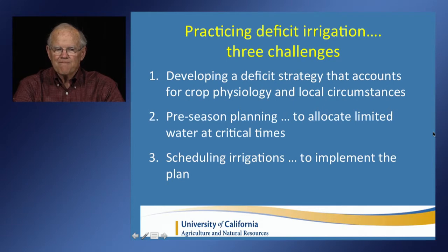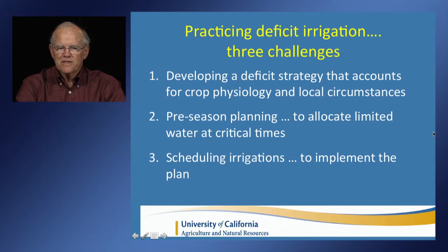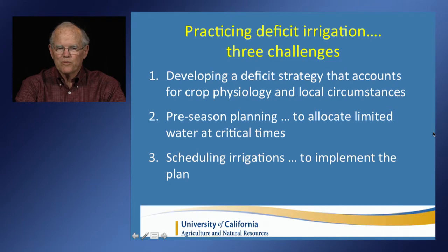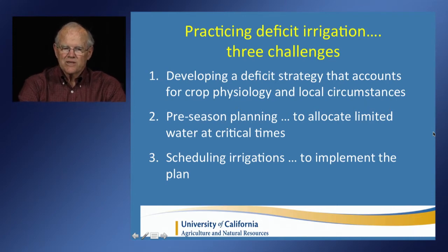The second challenge is preseason planning. Once you have a strategy in mind, you have to look ahead through the entire season. When practicing deficit irrigation, it's typically because you don't have as much water as desired. You'll therefore have to allocate that water among multiple crops and fields, and there will be times when that allocation becomes critical — where converging demands make it impossible to meet objectives and you'll need to shift water or cropping patterns. The third challenge is irrigation scheduling to implement the plan as you go through the season.